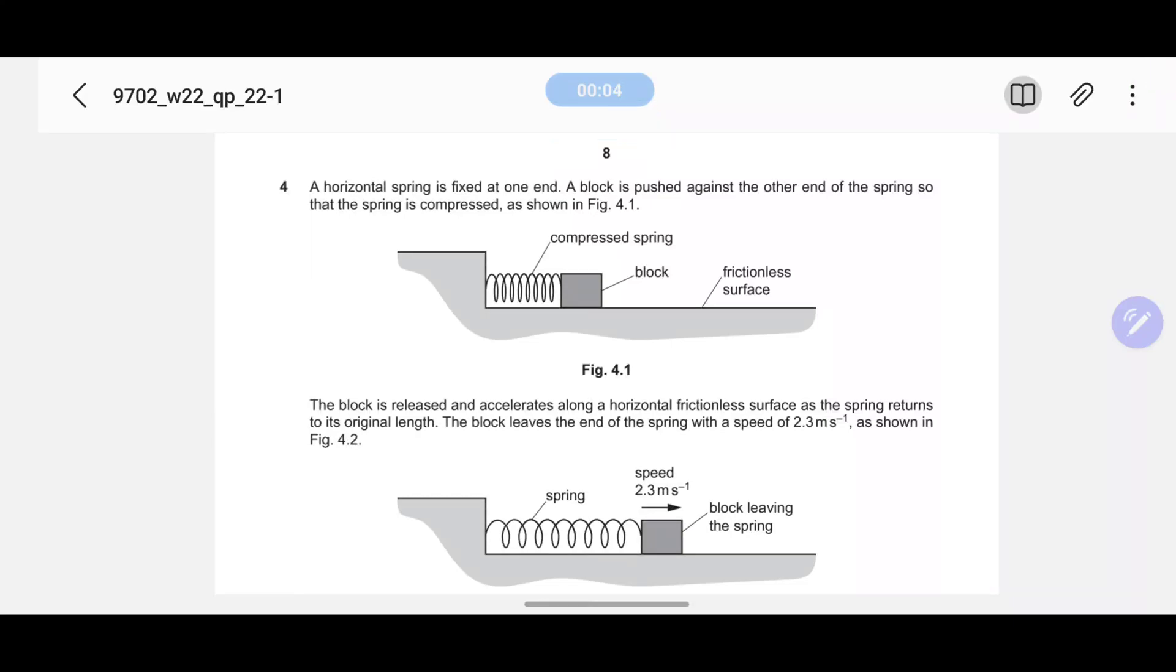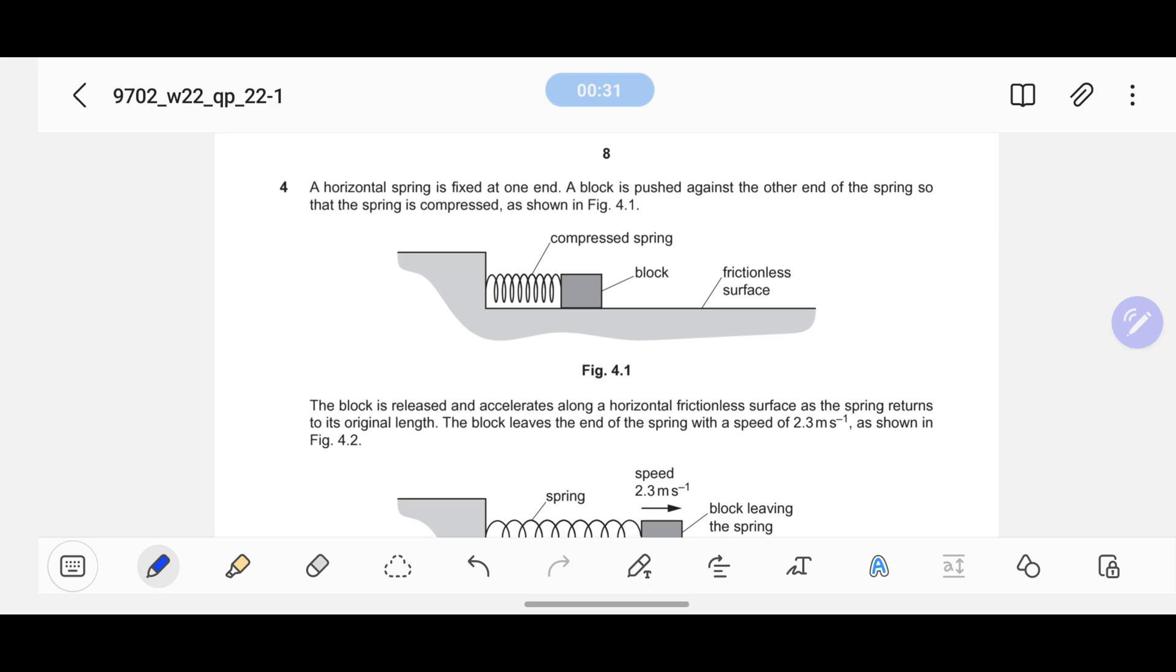Bismillahirrahmanirrahim. Question 4, Winter 22, Paper 22, Question number 4. A horizontal spring is fixed at one end. A block is pushed against the other end of the spring so that the spring is compressed as shown in Figure 4.1. The block is released and accelerates along a horizontal frictionless surface as the spring returns to its original length. The block leaves the end of the spring with a speed of 2.3 meters per second as shown in Figure 4.2.